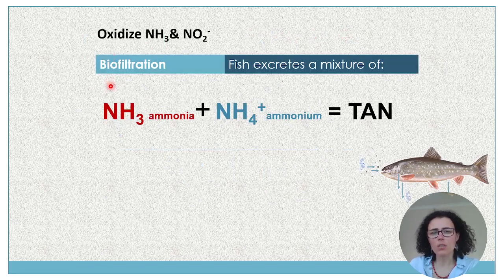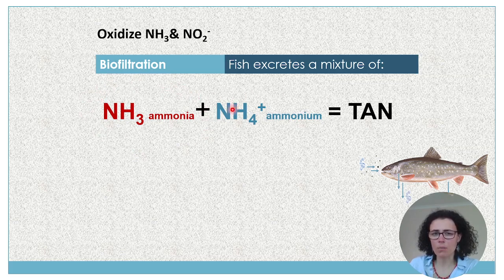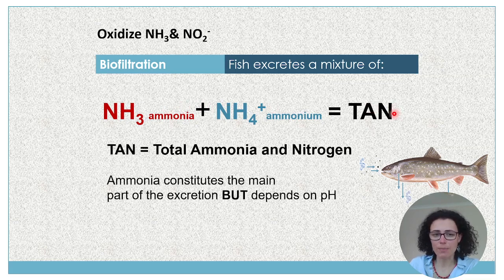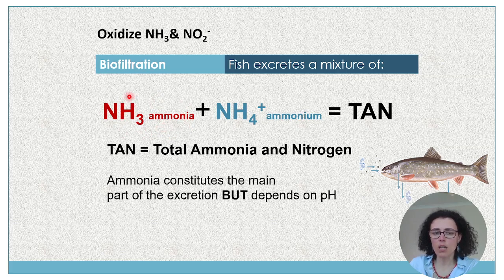The fish excretes to the water a mixture of ammonia in the molecular form and ammonium in the cation form. The combination of these two is the total ammonia as nitrogen, also called TAN. Ammonia, the molecular form, constitutes the main part of this excretion, but this depends on the pH.